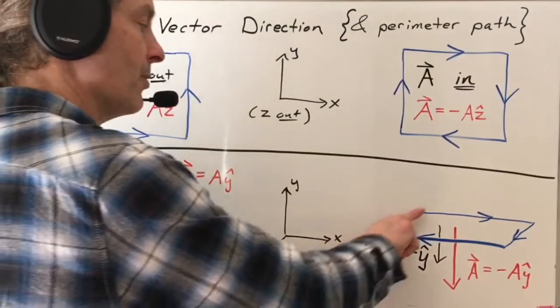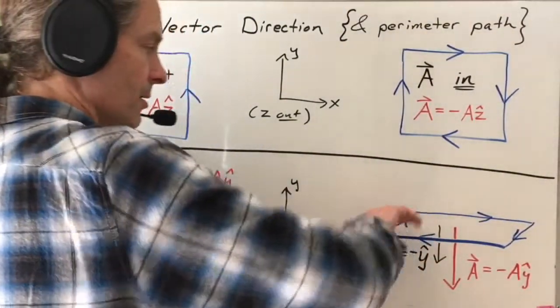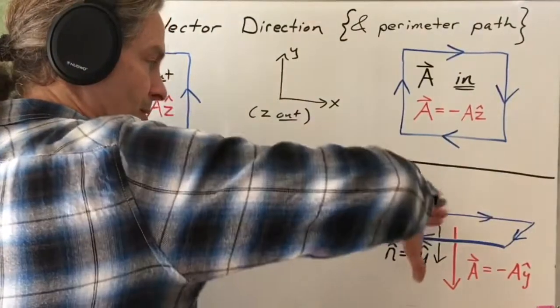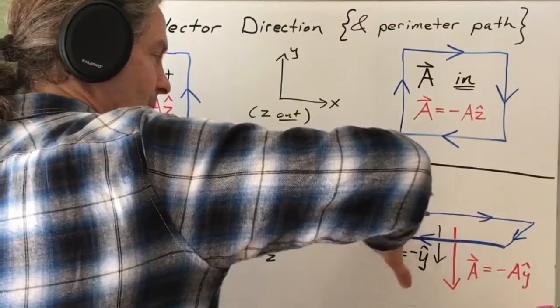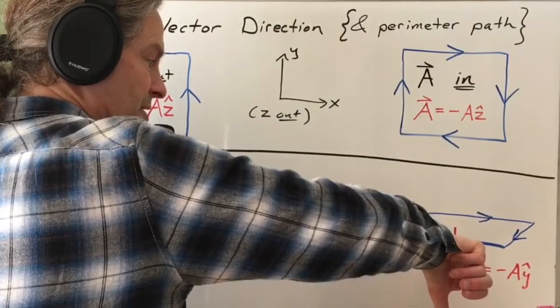On the other hand, if I go the other way around this pathway, so there's the back, there's the front, curl my fingers around, go this way around that path with my fingers, my thumb points in the direction of the area vector,